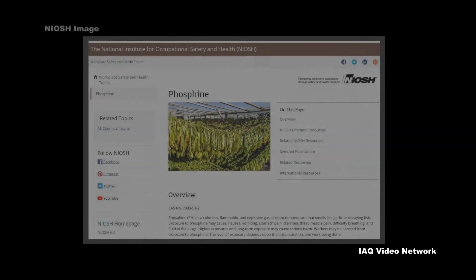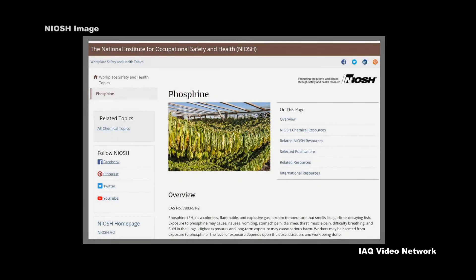The National Institute for Occupational Safety and Health describes phosphine as a colorless, flammable, and explosive gas at room temperature that smells like garlic or decaying fish.